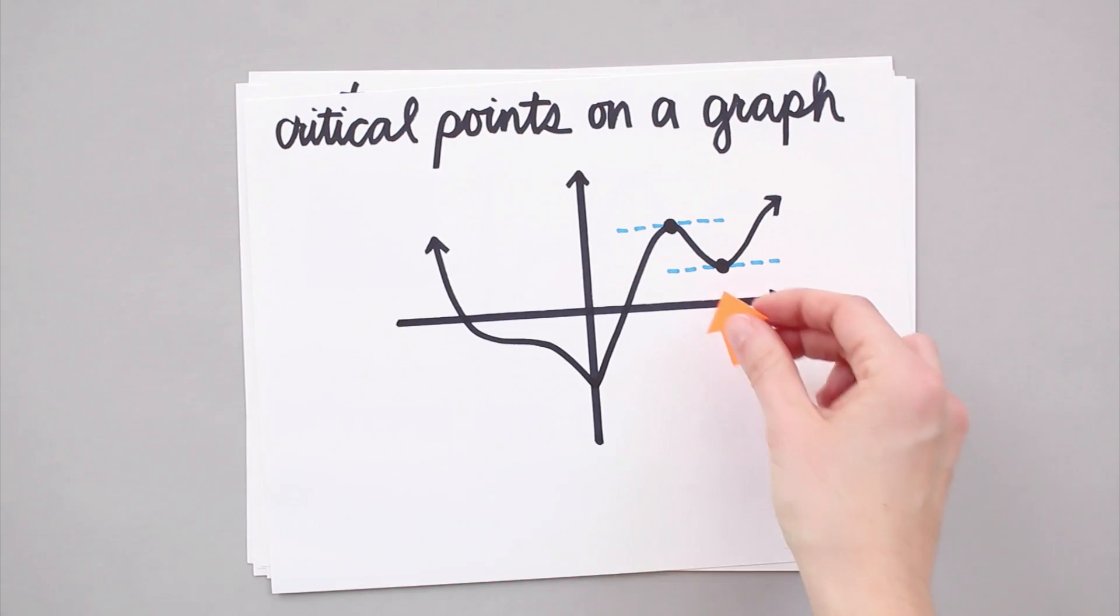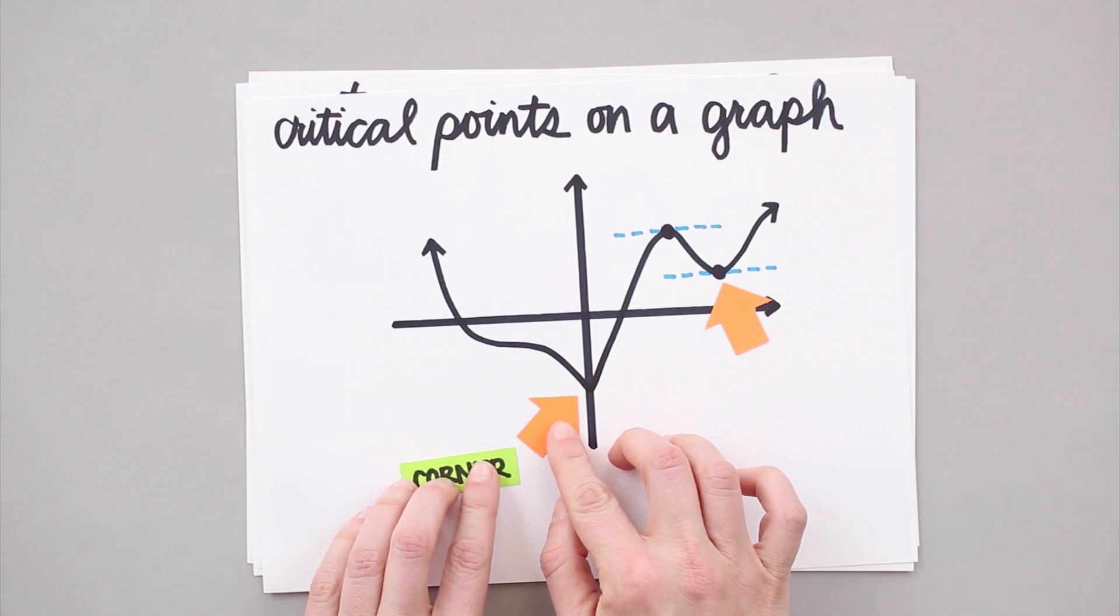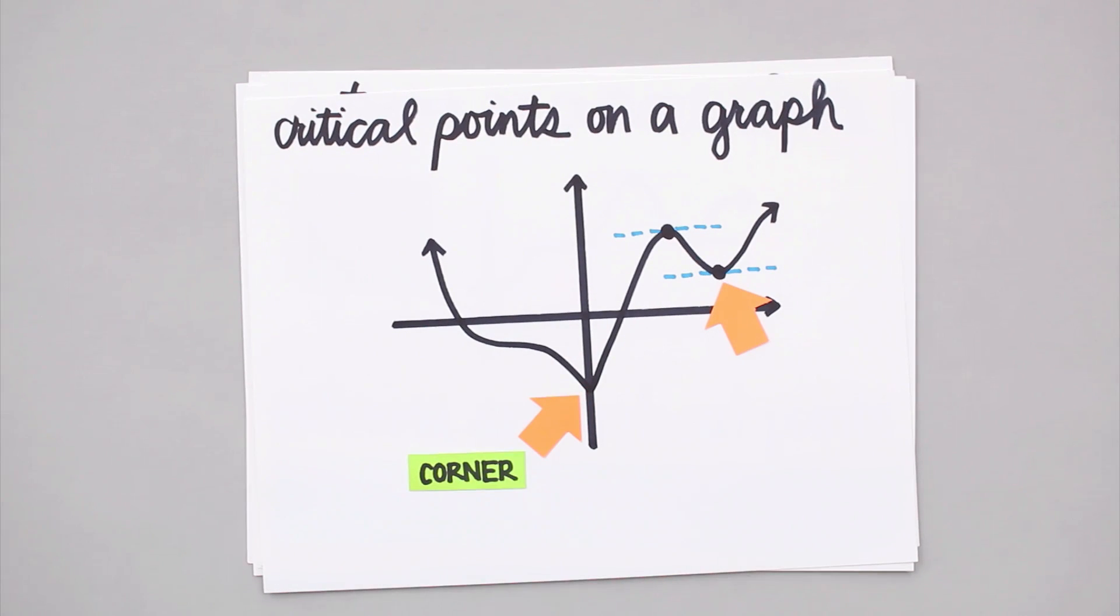On the graph, anywhere that the derivative equals zero will look like a horizontal tangent line, and anywhere the derivative doesn't exist will look like this, which we call a corner.